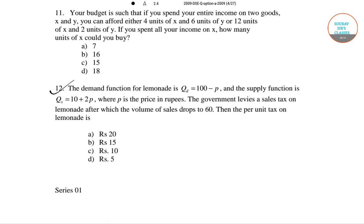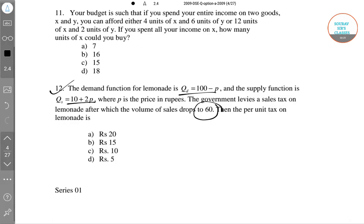In question number 12, the demand function of lemonade is QD equals 100 minus P, and the supply function is QS equals 10 plus 2P. The government levies a sales tax on lemonade after which the volume drops to 60. Then what is the per unit tax on lemonade?